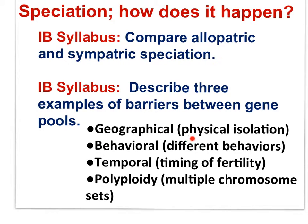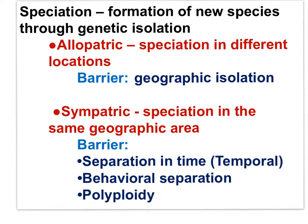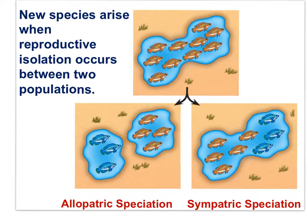Here are four different barriers to gene flow: the geographical or physical barrier, behavioral barriers, temporal barriers related to timing of fertility, and polyploidy which involves multiple chromosome sets. Speciation is the formation of new species through genetic isolation. We can see a single species separated into two different species through allopatric speciation or sympatric speciation. In allopatric speciation, the barrier between the two groups is geographic — geographic isolation separates them so they become different species.